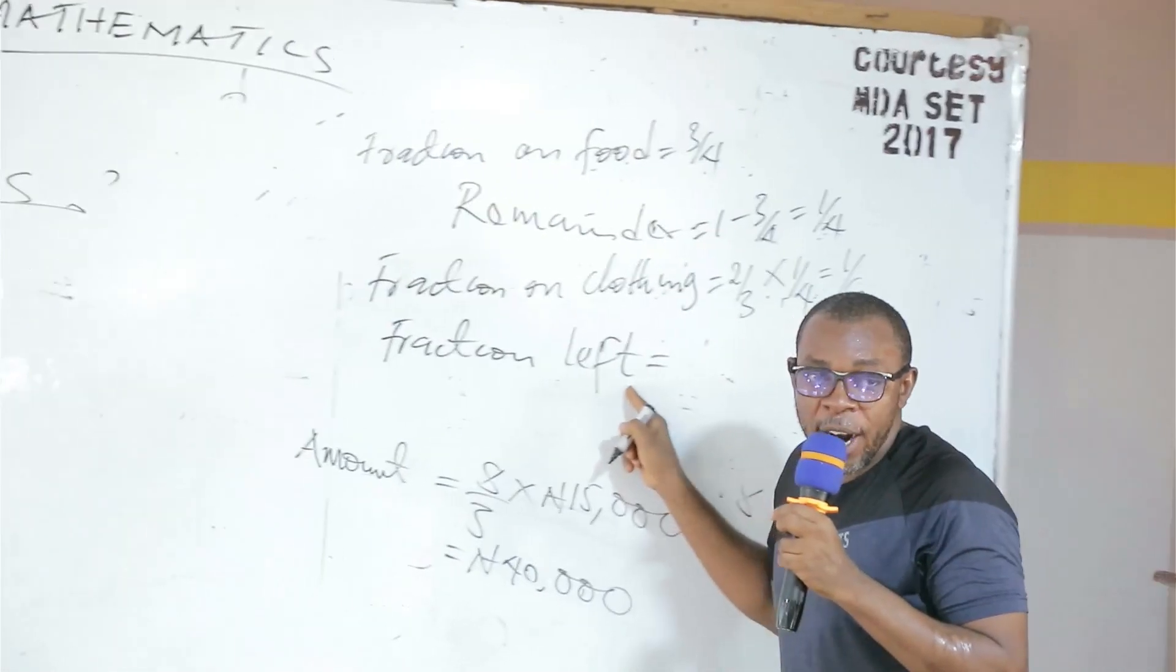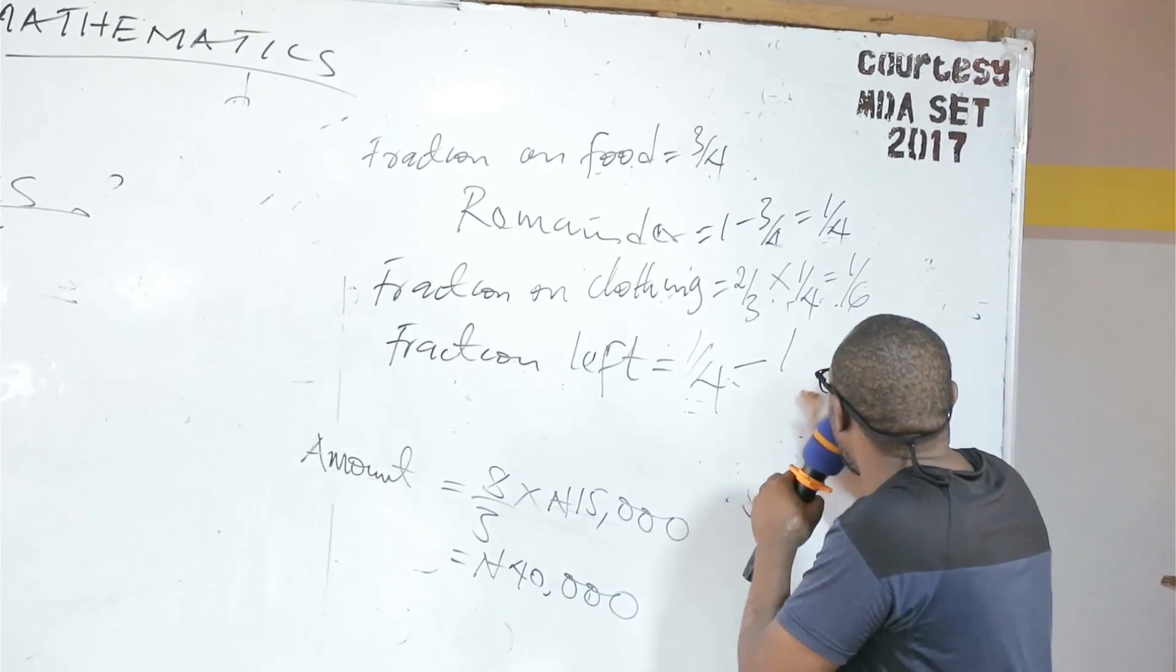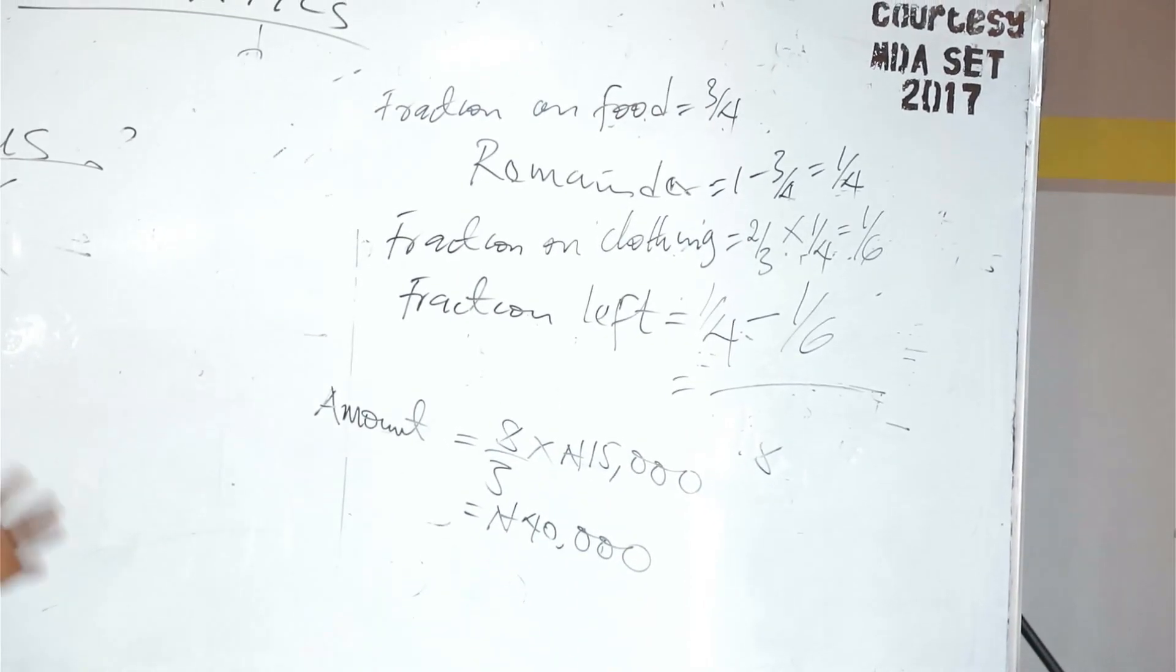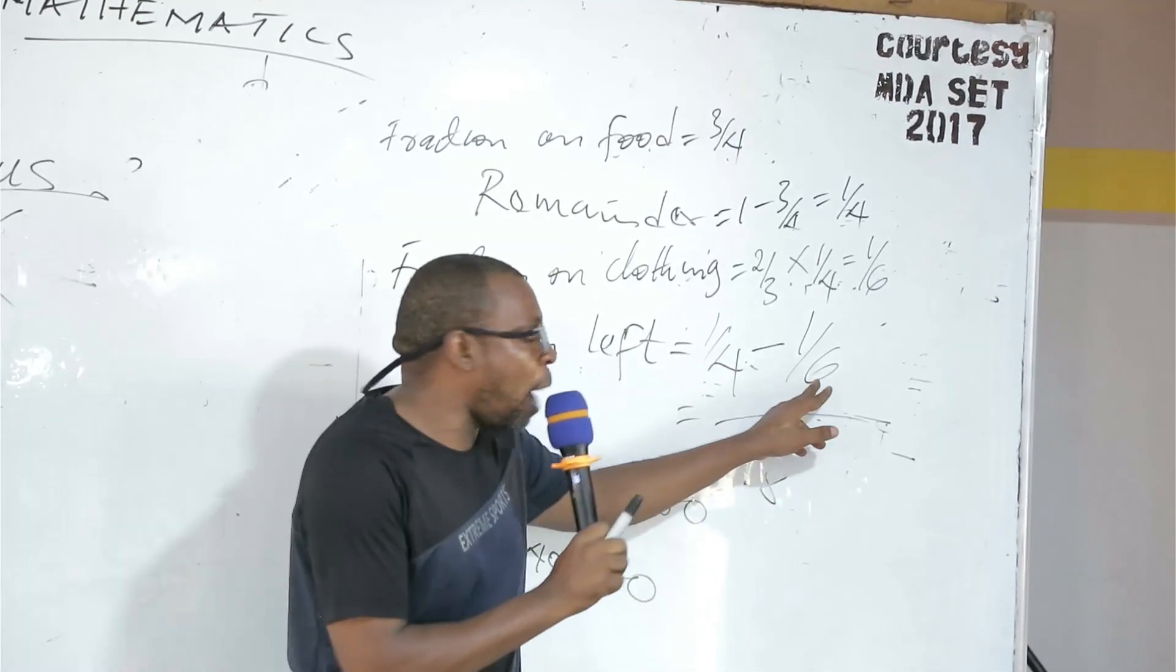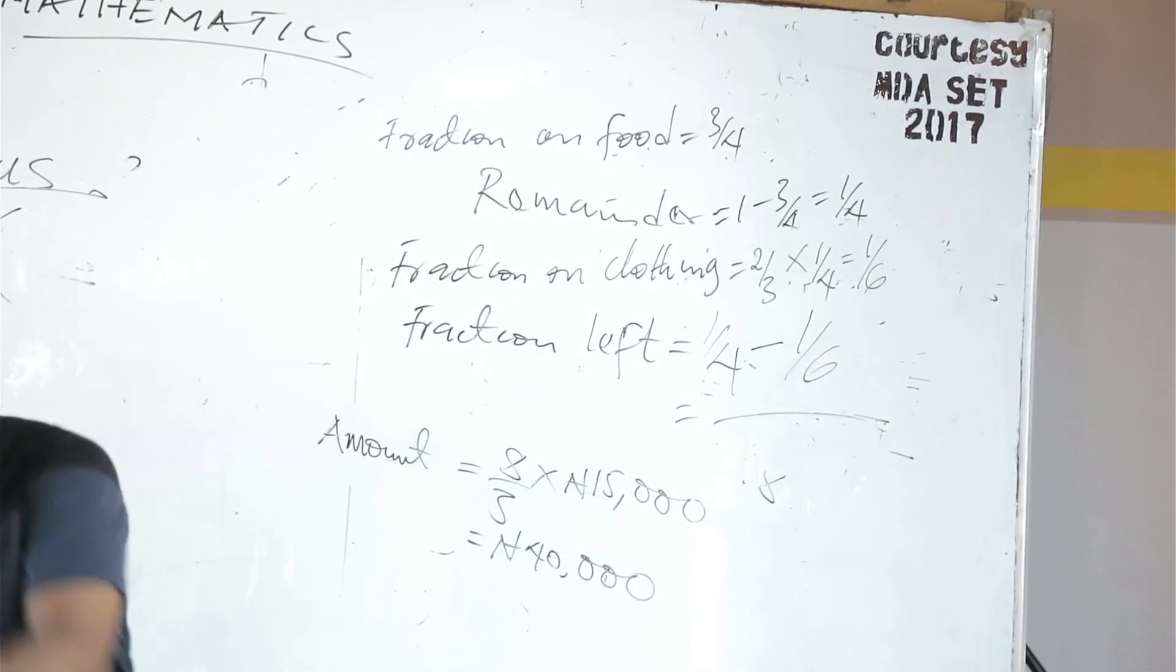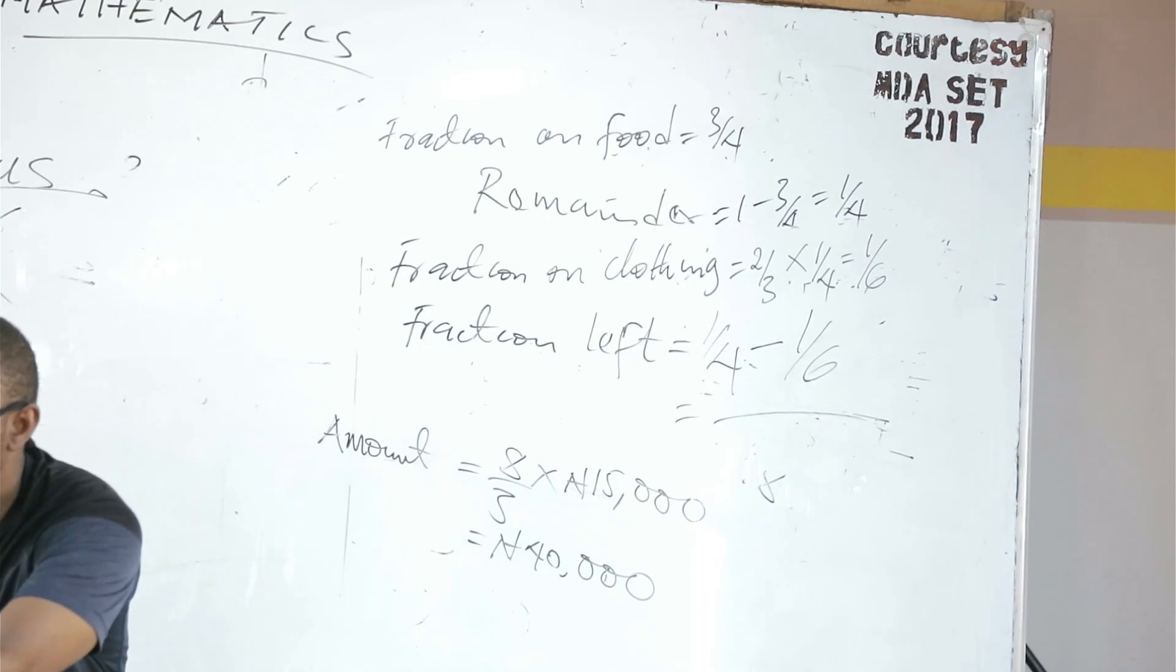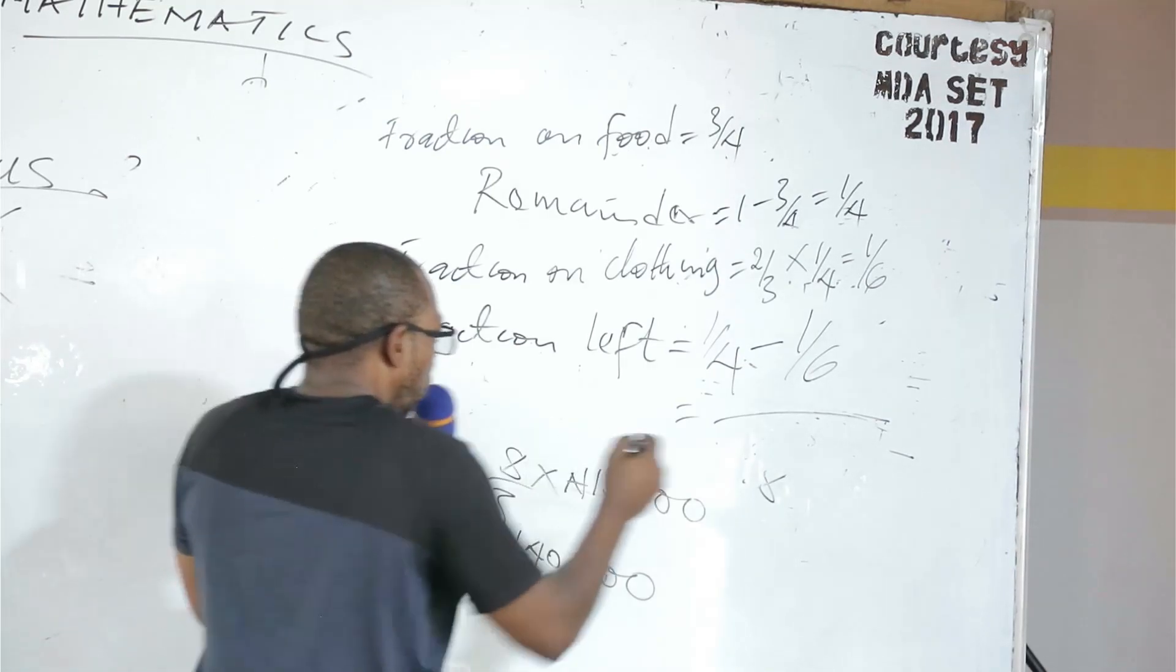Fraction left. One over four minus one over six. My LCM is 12. Just keep adding four. Add the bigger one, add six to six. Keep adding four. Four plus four, eight plus four. You have reached 12. So 12 is the LCM.